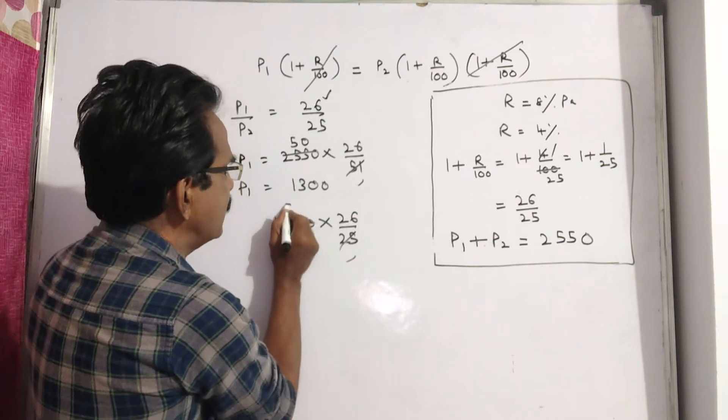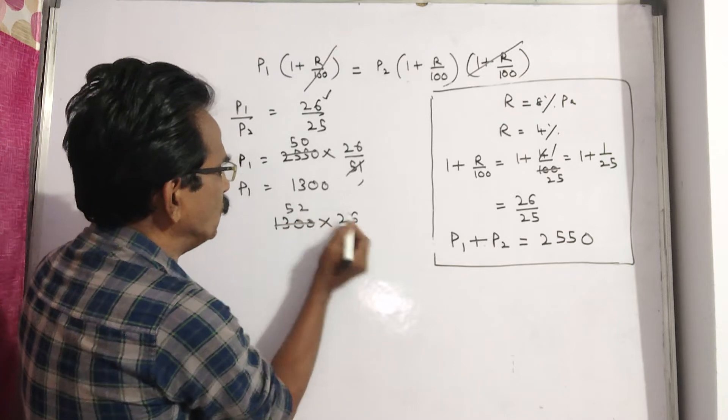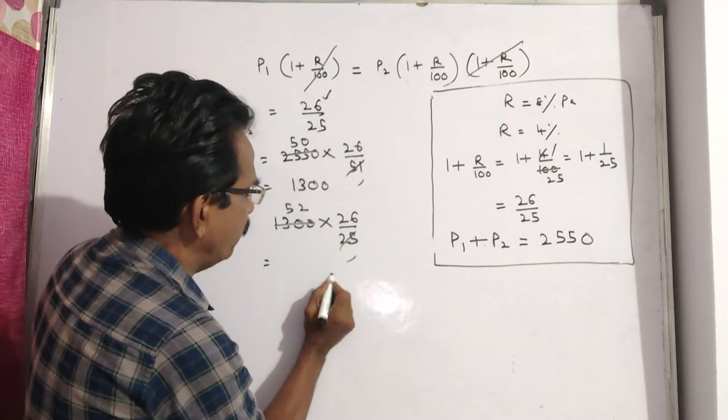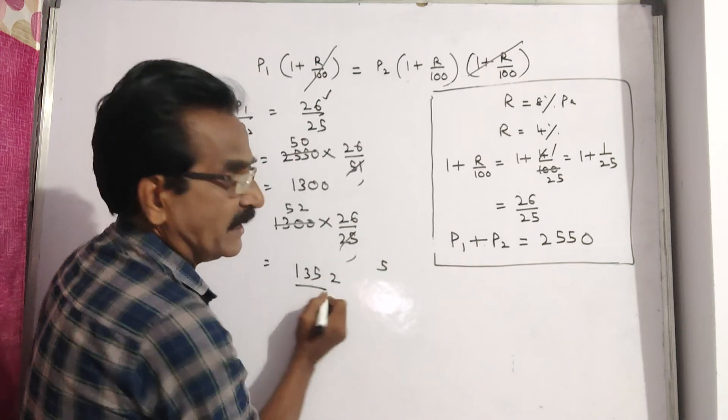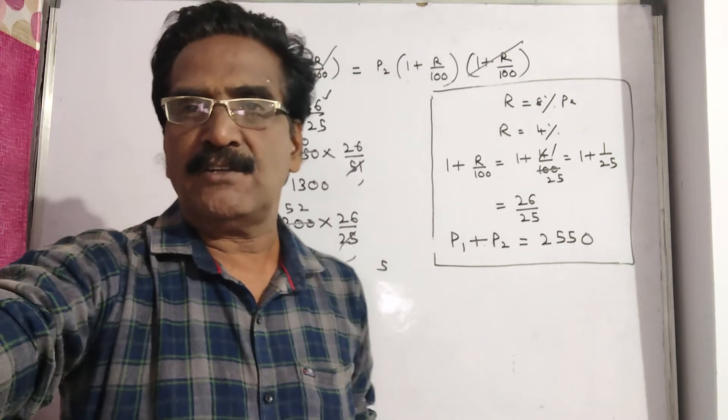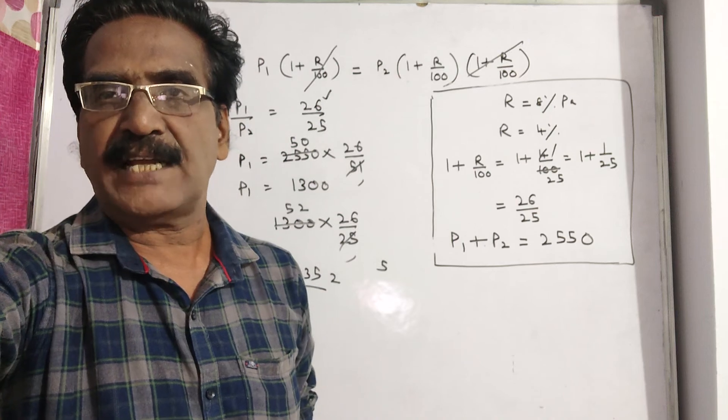That's 1300 into 26 by 25. 25 cancels, giving 125. 25 twos, 26 twos equals 52. 26 cancels. 130 plus 5 equals 1352. This is the value of the installment. Okay friends, thank you. Have a nice day.